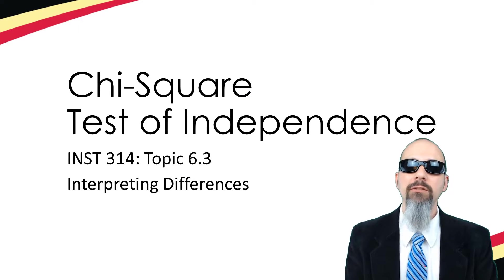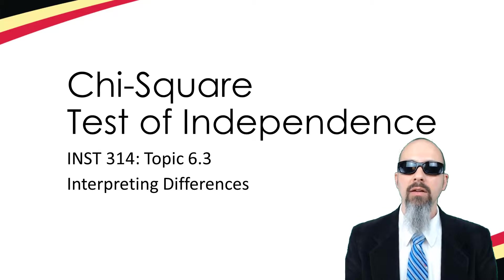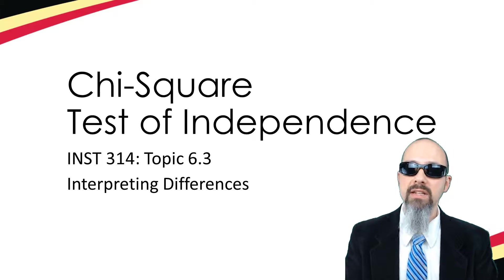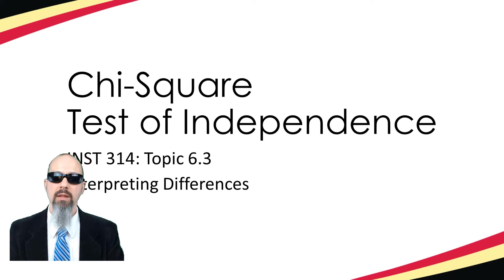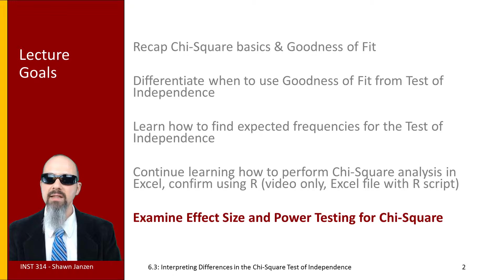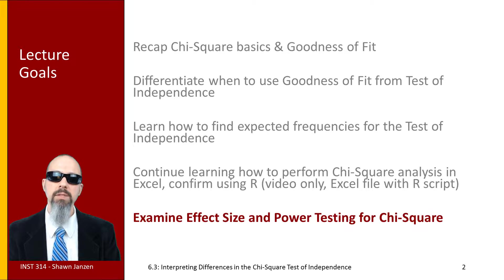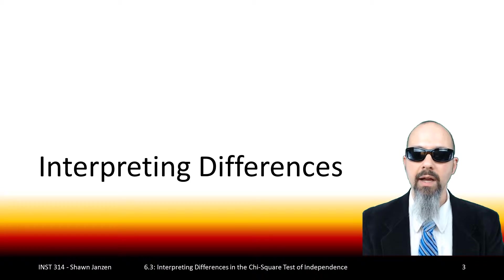Hey there, welcome back to INST 314 Statistics for Information Science with Sean Janssen. We're going to do the last of our slide videos for the chi-square test of independence, focusing on 6.3: interpreting the differences of the chi-square test of independence. This particular video is going to be looking specifically at effect size and power testing of the chi-square.